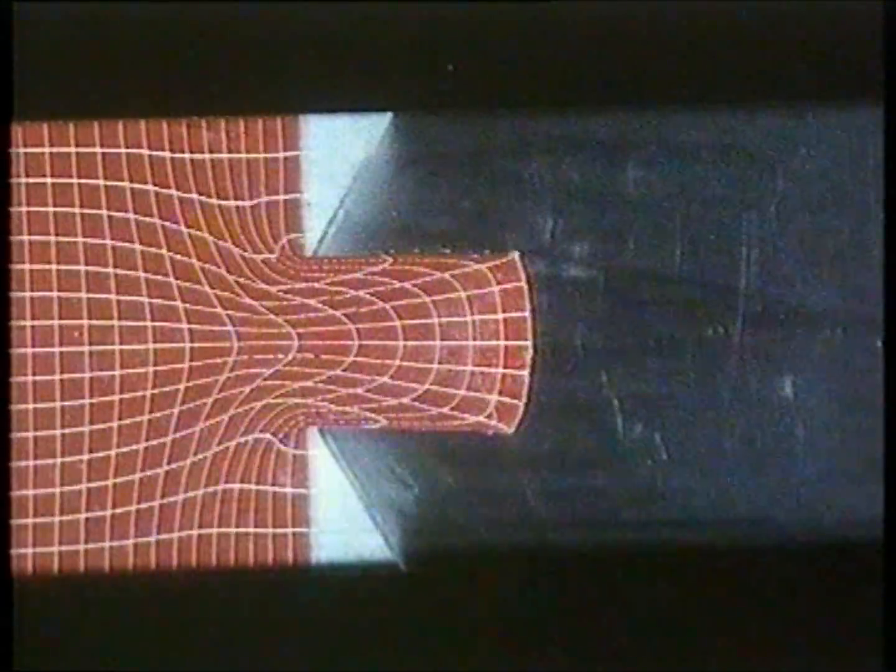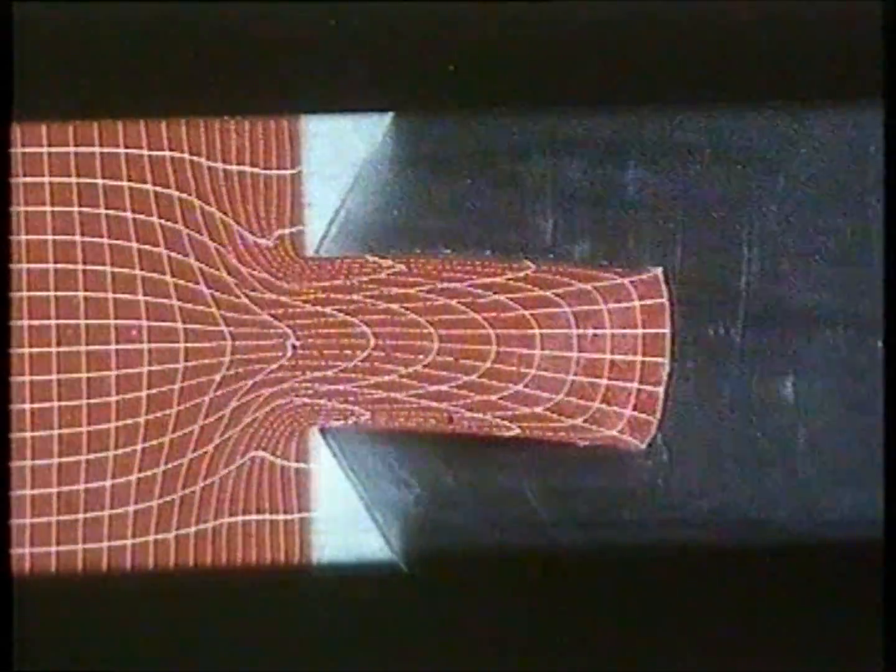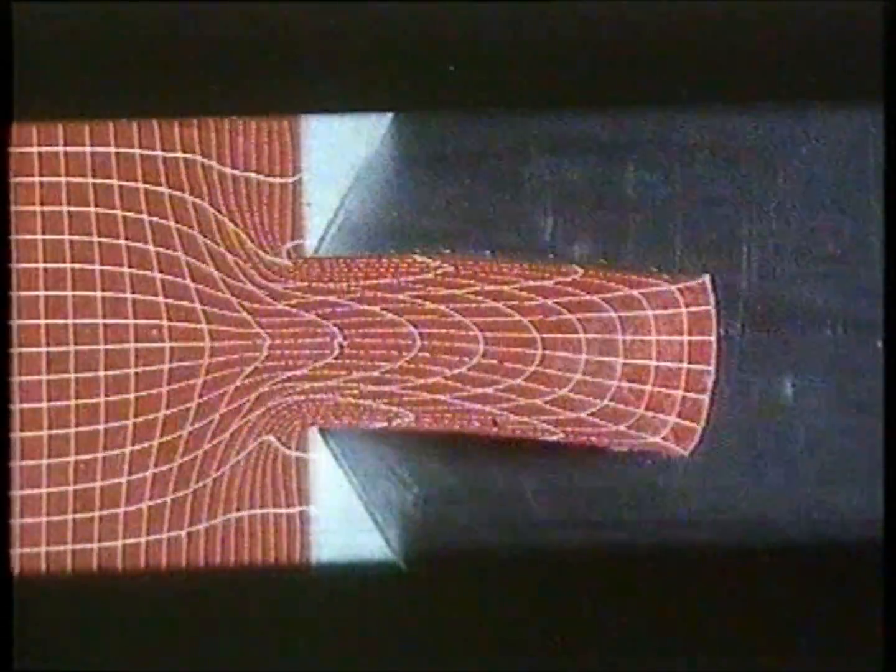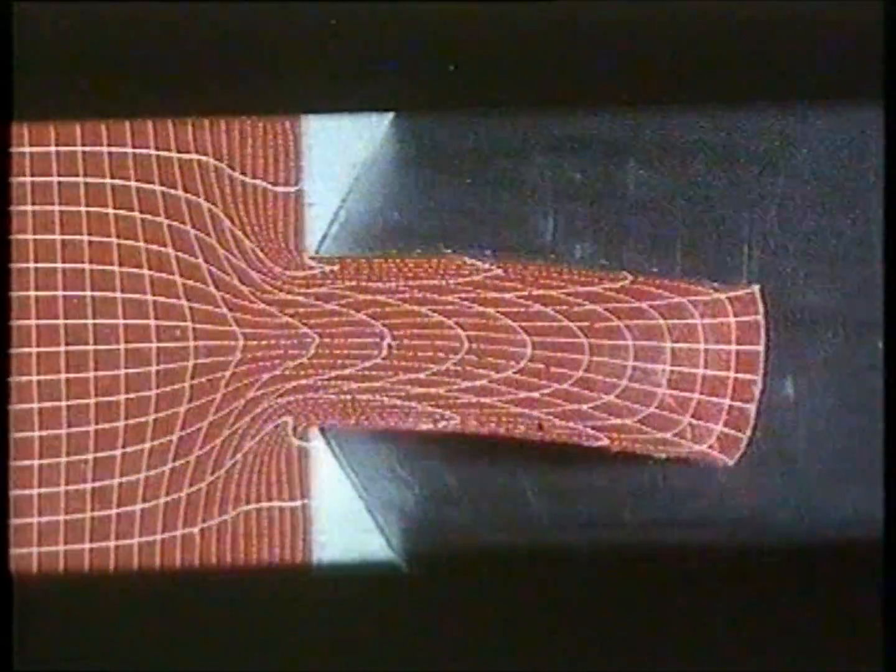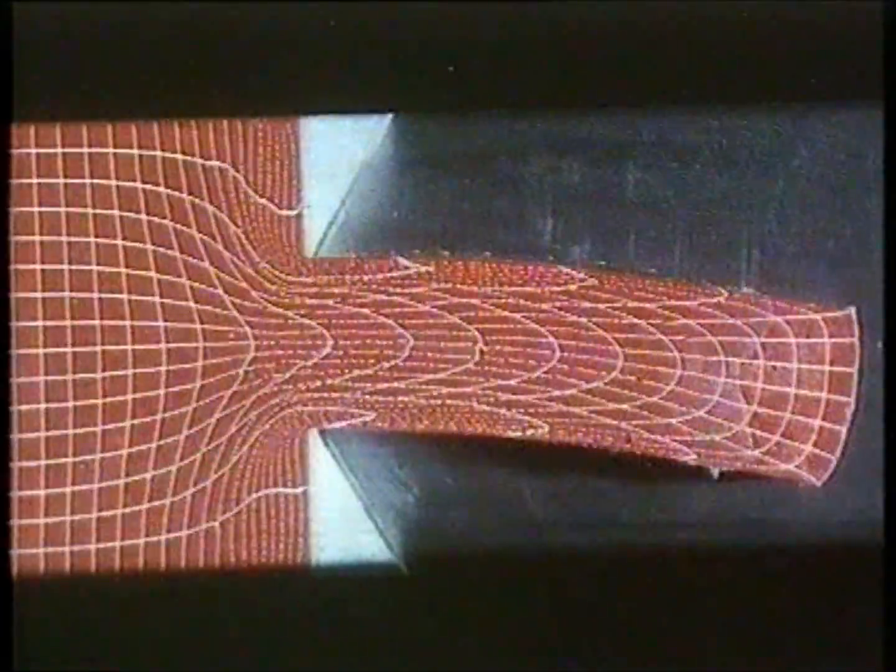Finally, let us consider the forward extrusion process with a reduction of 60% and with a 90 degree dye angle. This time, the velocity of the deformed material is relatively high. The dead zones develop more slowly in relation to the extruded length, but the strain gradients along the edges of the bar are also present in this case.